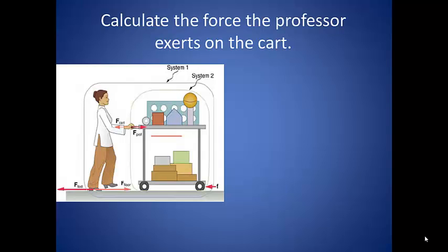So in this situation, system 2 is defined as the cart and its supplies. We again want to draw out a free body diagram to help us visualize the forces.